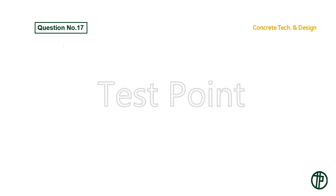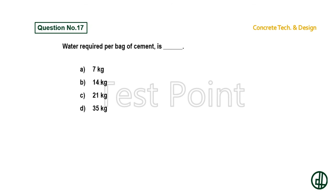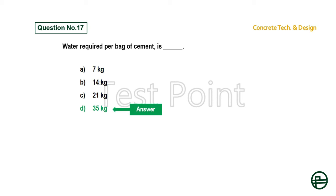Question number 17: Water required per bag of cement is — Option A: 7 kg. Option B: 14 kg. Option C: 21 kg. Option D: 35 kg. Answer is Option D: 35 kg.